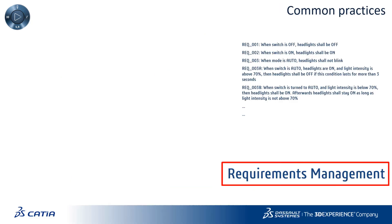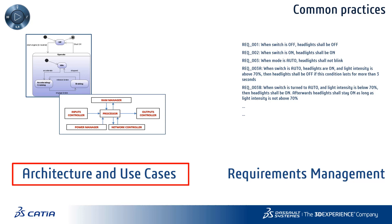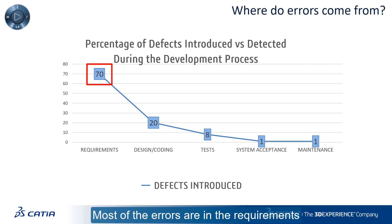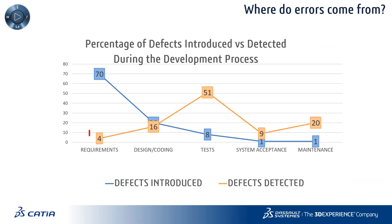Requirements management tools bring traceability and versioning capabilities, and MBSE tools help capture the architecture and use cases of complex systems. However, despite this, most errors are introduced during the specification phase when writing the requirements, and very few of these errors are discovered at this time, generating rework, delays, and additional costs.